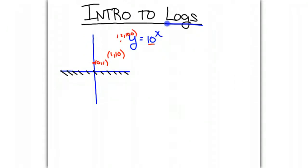The b value is 10, so we know it's a growth function, and this is what y equals 10 to the x looks like.